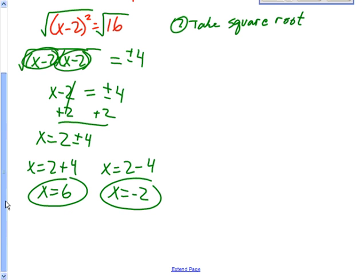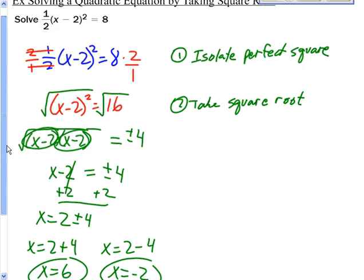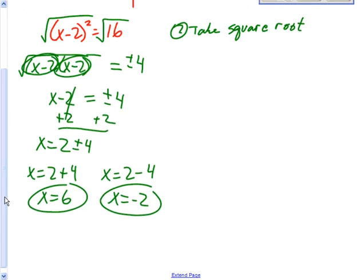Add 2 to both sides: x equals 2 plus or minus 4. That gives two answers: 2 plus 4 equals 6, and 2 minus 4 equals negative 2. Make sure you plug both back into the original equation to verify they satisfy it.